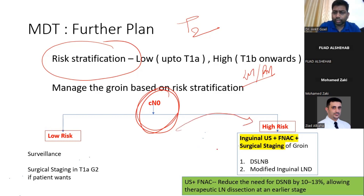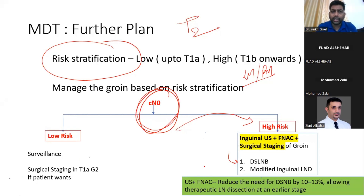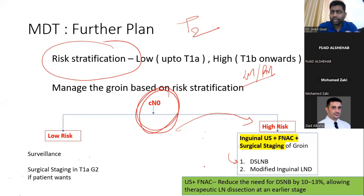In those high-risk patients, we cannot just keep the patient on surveillance; we have to offer a dynamic sentinel lymph node biopsy. The question is: what is the role of ultrasound or FNSE? Because anyway we have to offer the patient a dynamic sentinel lymph node biopsy even if the groin nodes are not palpable. If the inguinal ultrasound is negative with no nodes, you are still going to do a dynamic sentinel lymph node biopsy.